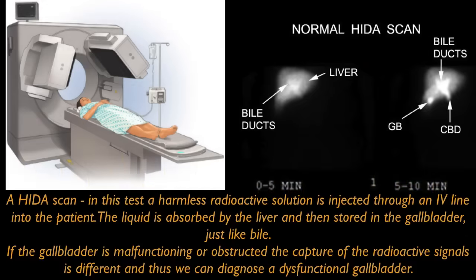A HIDA scan: in this test, a harmless radioactive solution is inserted through an IV line into the patient. The liquid is absorbed by the liver and then stored in the gallbladder, just like bile. If the gallbladder is malfunctioning or obstructed, the capture of the radioactive material signals are different, and thus we can diagnose a dysfunctional or diseased gallbladder.